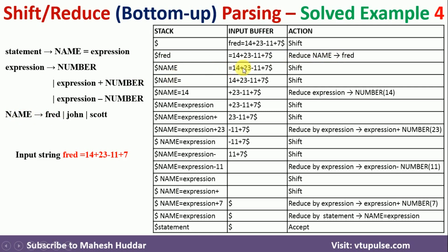Now we shift the next token, which is the equals sign. With name equals on the stack we have nothing to reduce, so we shift the next token: 14. Now the stack has name equals 14, and 14 is actually a number.